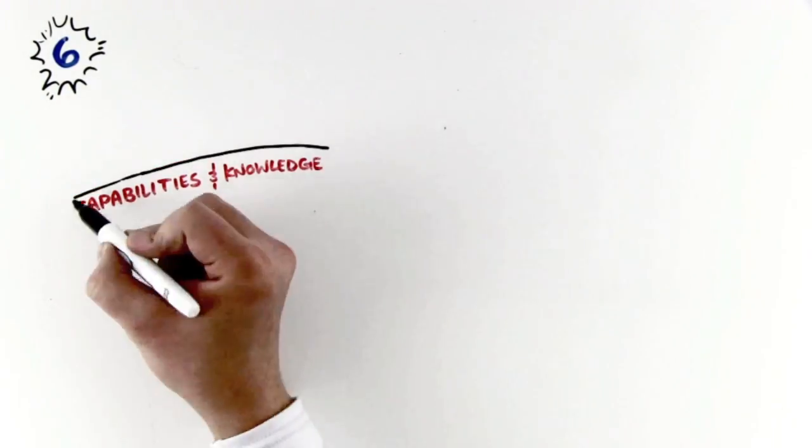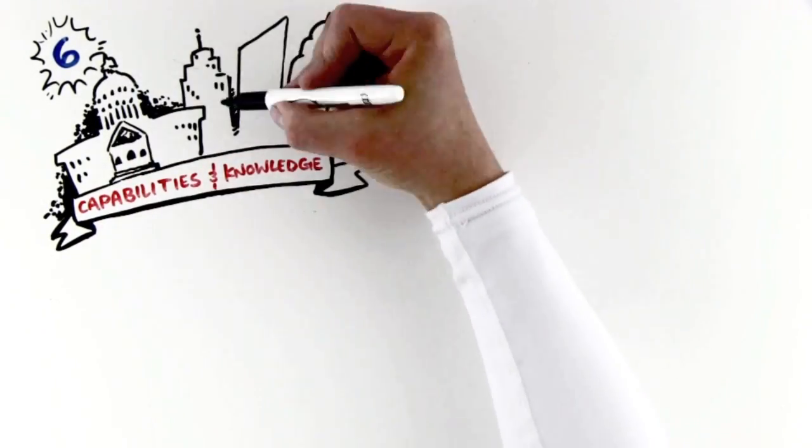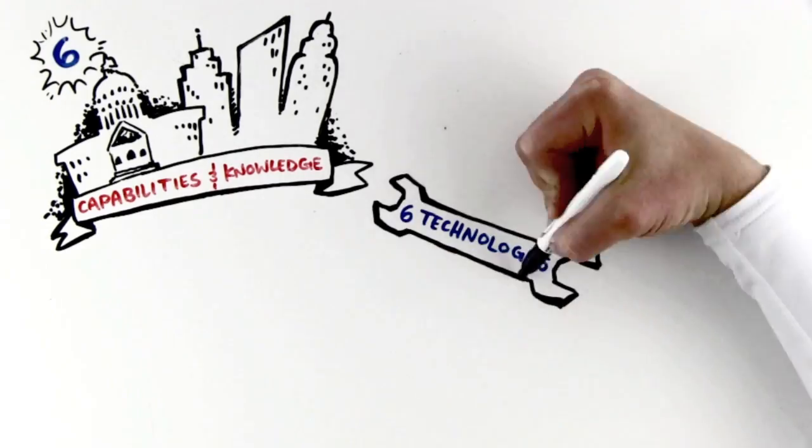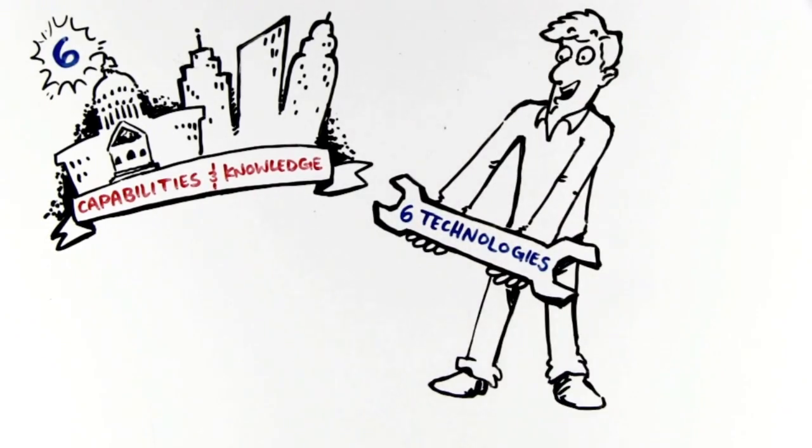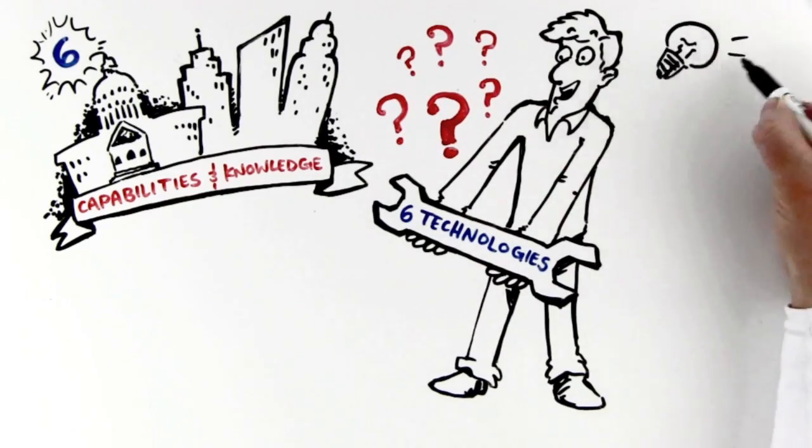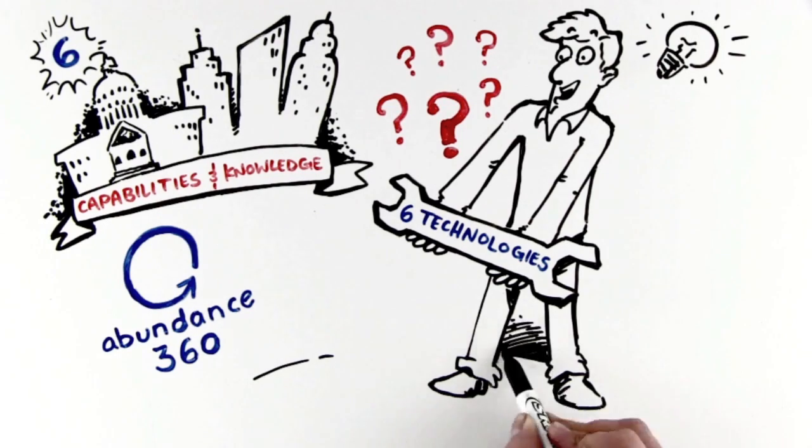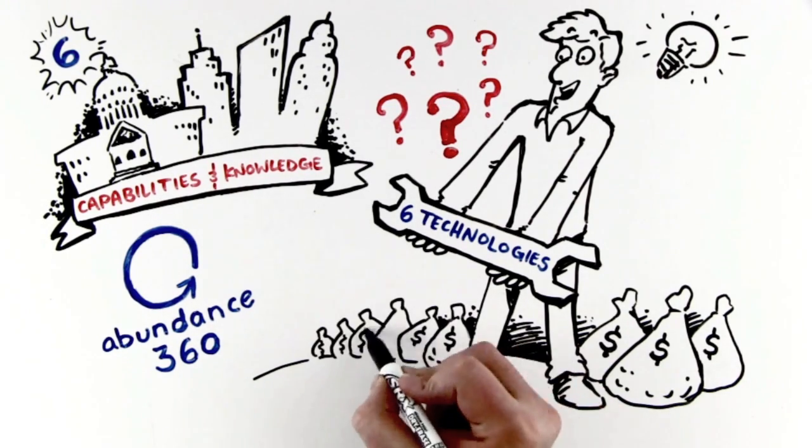Thanks to these six exponential technologies, capabilities and knowledge that once fell solely under the domain of powerful governments and the world's largest corporate giants are now tools that sit in the hands of the entrepreneur, giving you the power to see and fix problems faster than ever before, and moving us toward a world of true abundance and the unprecedented creation of wealth.